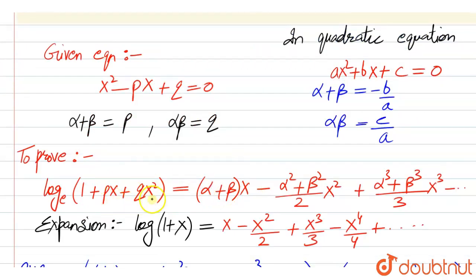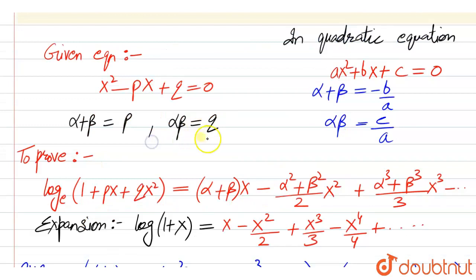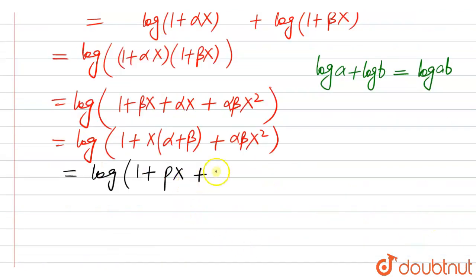Now if you look at the left hand side part, we have p and q. So we can substitute p and q. Alpha plus beta can be replaced by p, this is px, and alpha into beta can be replaced by q. So this is qx squared.